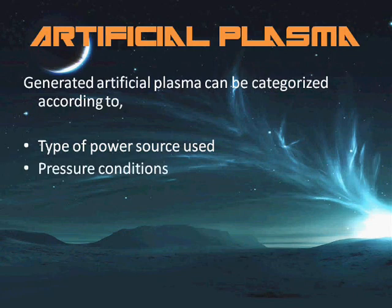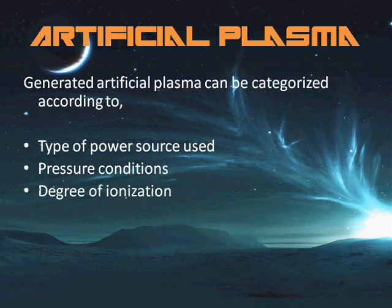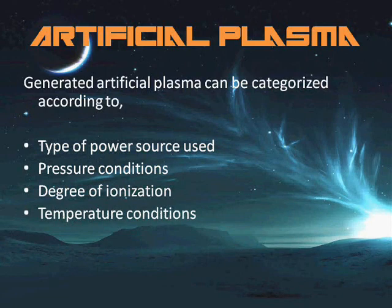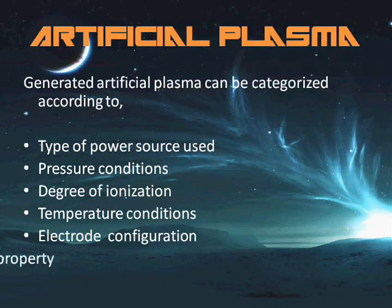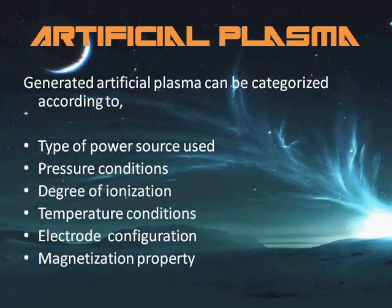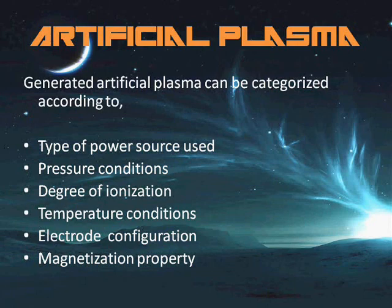Plasma generated in the laboratory for industrial use can be generally categorized by the type of power source used — it may be DC, RF, or microwave. The pressure they operate at may be vacuum (more than 10 mT or 1 Pa), moderate pressure (1 Torr or 200 Pa), or atmospheric pressure (760 Torr or 100 kPa). The degree of ionization within the plasma may be fully, partially, or weakly ionized. Temperature relations include thermal plasma, non-thermal plasma, and cold plasma. As for magnetization, fully magnetized plasmas have both ions and electrons trapped in Larmor orbits; partially magnetized plasmas trap electrons but not ions; and non-magnetized plasmas have a magnetic field too weak to trap particles in orbit but may generate a Lorentz force.